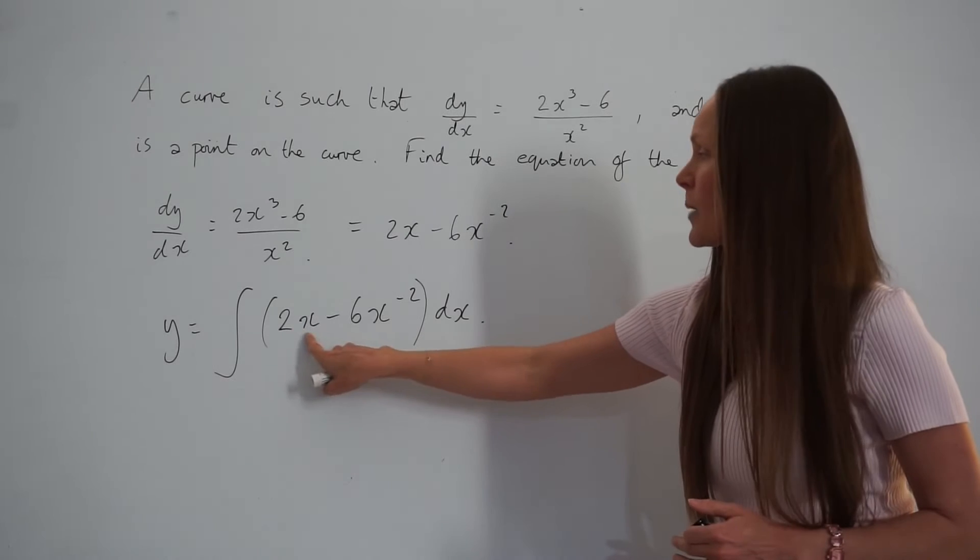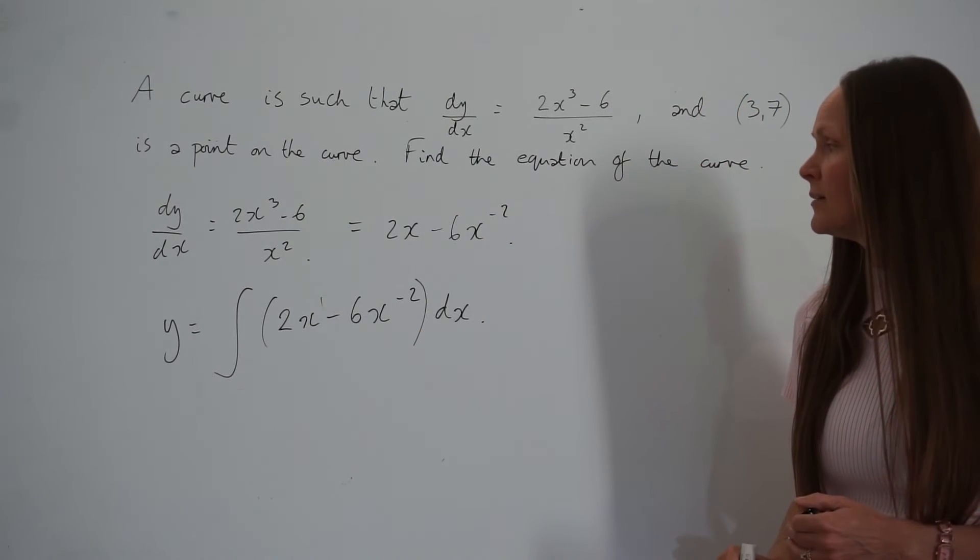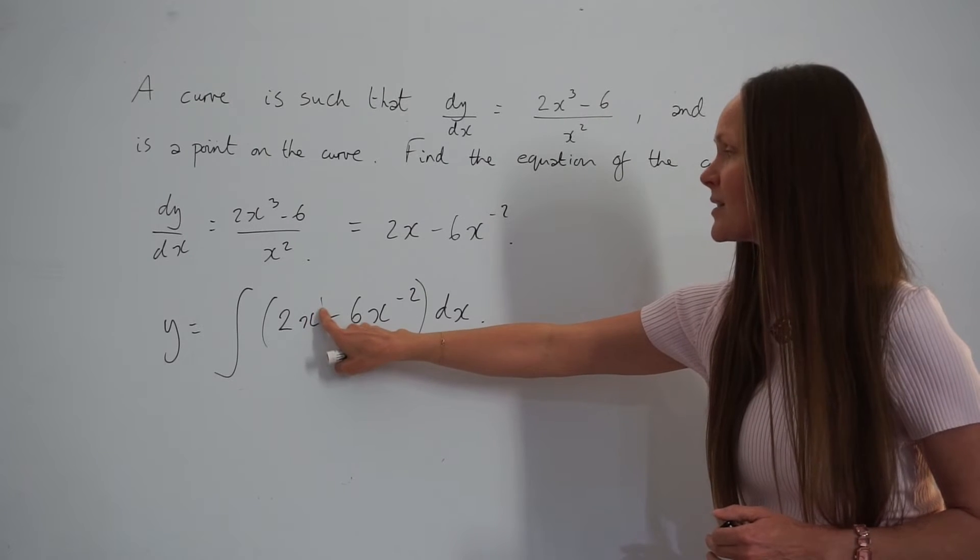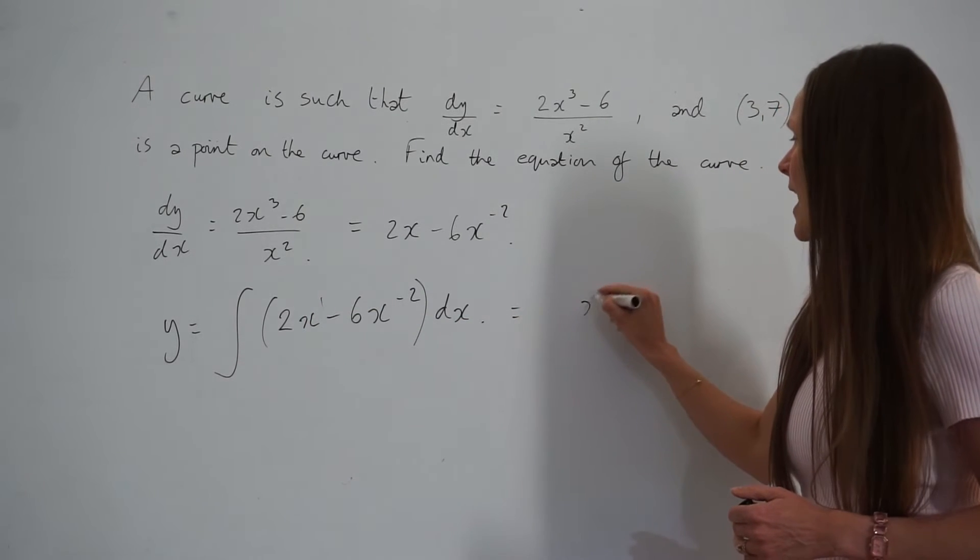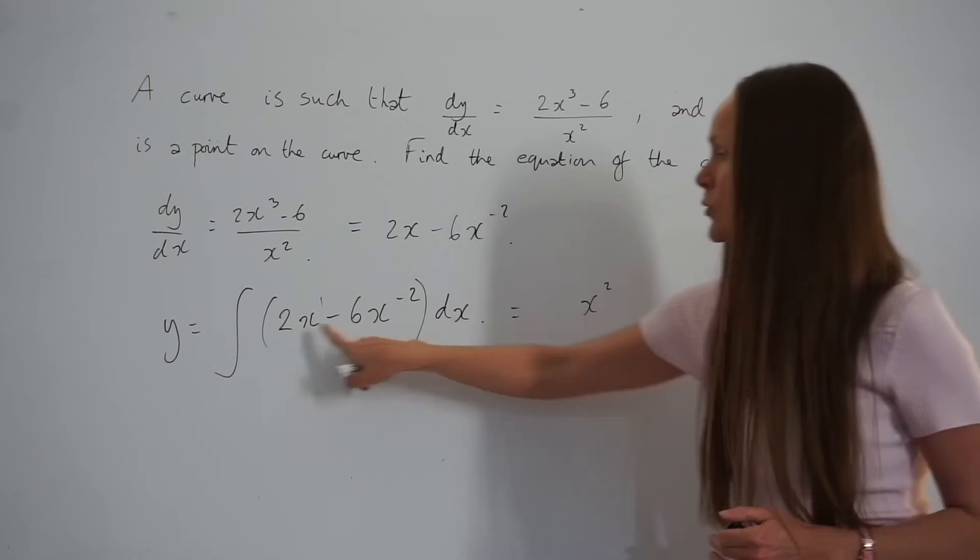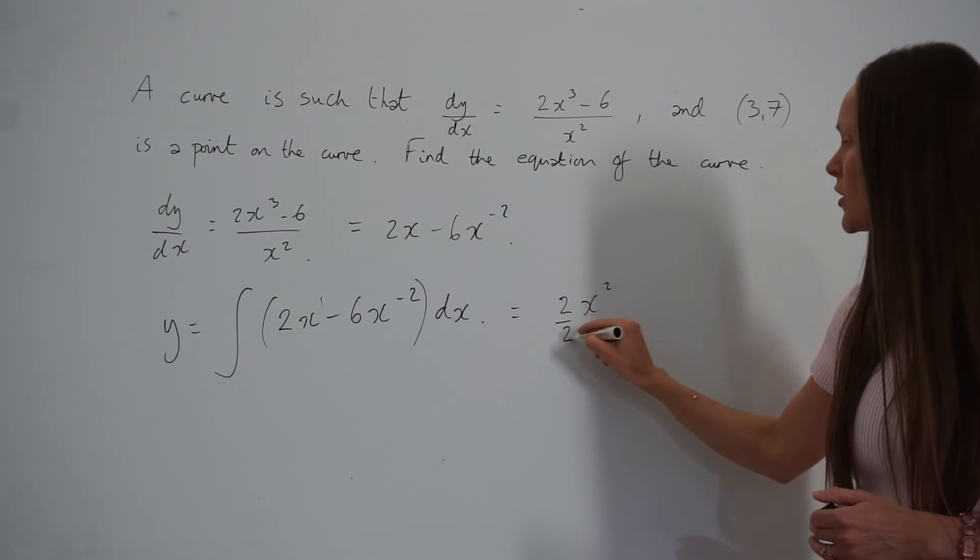2x is the same as 2x to the power of 1. If I increase this power by 1, I get x². And remember, you're dividing this number by the new power. So 2 divided by 2 for the first term.